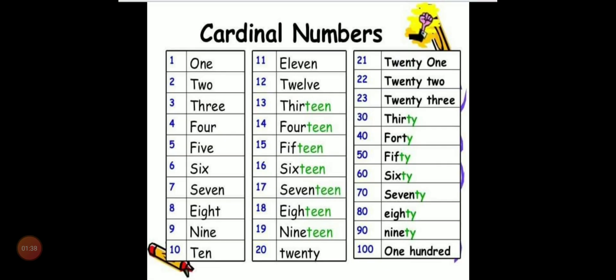Now, we represent cardinal numbers as 1, O-N-E-1, 2, T-W-O-2, 3, T-H-R-E-E-3, 4, F-O-U-R-4, 5, F-I-V-E-5 and so on.